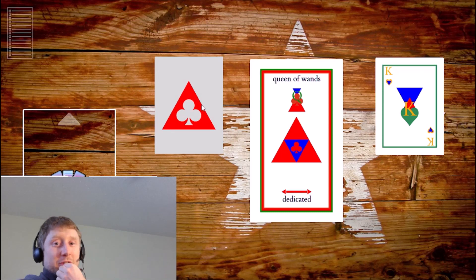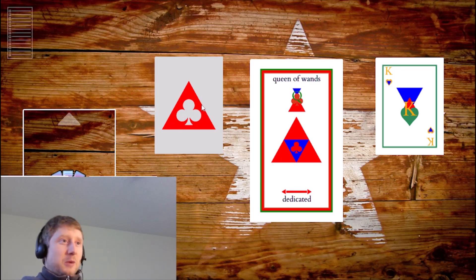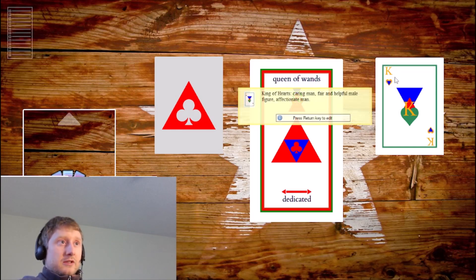We got the Queen of Wands, and the Queen of Wands is a very dedicated energy with a little bit of water mixed in. This makes a lot of sense because the water element is the closest to what we have for snow—it's just cold water. We also have the King of Hearts here, which is part of the cups, the emotional watery suit. It's a caring man, helpful figure, an affectionate divine masculine energy.